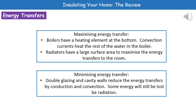In terms of energy transfers, depending on the actual purpose, we may be looking to either maximize it or minimize it. If we think about examples in our home where we're trying to maximize the energy transfer, the first one is in the boiler. In our boiler, we've got a significant amount of water and we have a heating element at the bottom. The reason we've placed that heating element at the bottom is because we're then going to set up a convection current